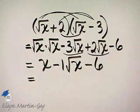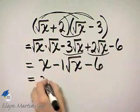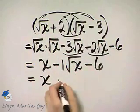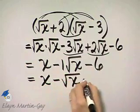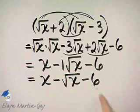These are all now unlike terms. The only thing I can do is write this as x minus square root of x minus 6. But nothing can be combined, all unlike terms.